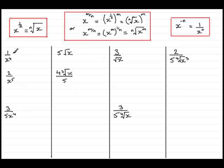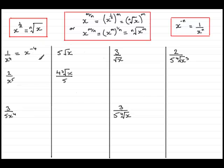Let's start with 1 over x to the power 4. Well, 1 over x to the power n is identical to x to the power minus n. So in this example n is 4, and we can write this as x to the power minus 4. So if I had 1 over x to the power 5 that's x to the minus 5, and 1 over x squared is x to the minus 2, and so on.